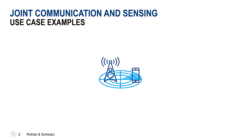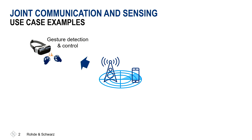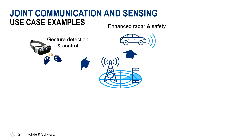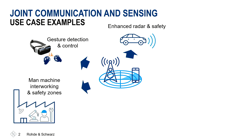So let's spend a few minutes looking into this topic and also how test and measurement support these research activities. Starting with some use case examples: we have gesture control and detection, automotive radar and safety — more well-known use cases that can be enhanced — and also industrial applications where machines and humans work together, where environmental sensing might be helpful.